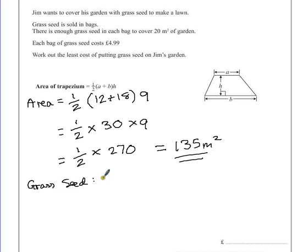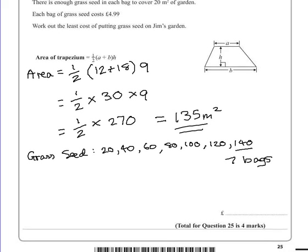So one bag will cover 20, that's not enough. Two, three, four. So five bags covers 100 metres squared. Six bags would cover 120, so we're going to have to buy seven bags. Make that really clear, so that even if we mess up with our calculations earlier, we know that this is how we've got there. So at worst, we may lose one mark if you make a slight calculation error at any stage.